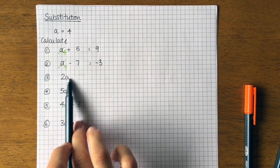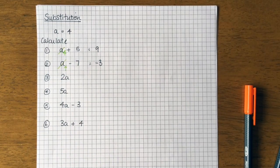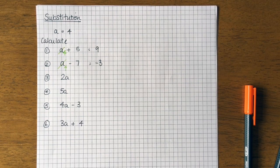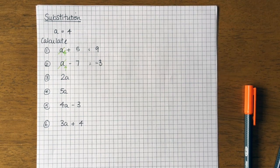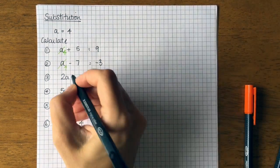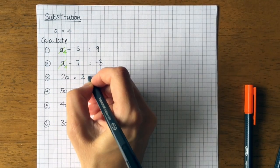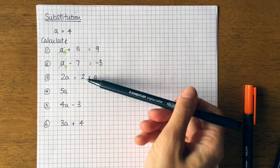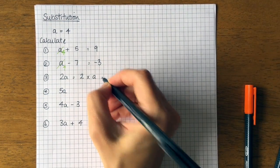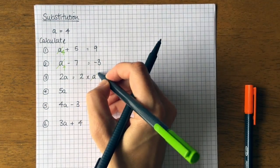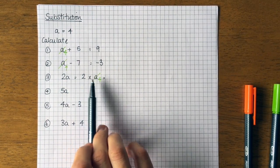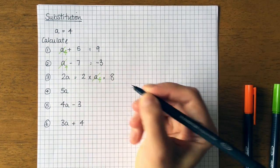Now this one is slightly different because we've got a number and a letter attached to each other. So we've got two a. So that means two lots of a, it means two a's, doesn't it? So the calculation that we would need to do for this one is two times a. So you need to remember that when a number and a letter are together we're multiplying them. So I do the same thing. I'm going to replace my a with four. So I'm actually doing the calculation two times four which is eight.